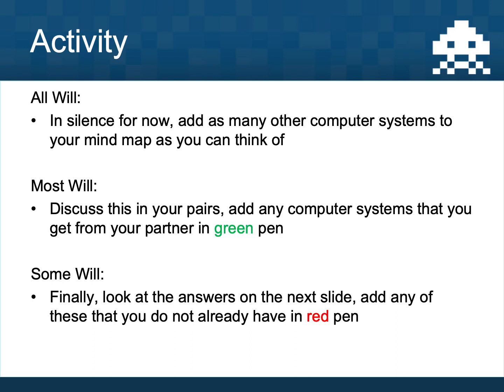Add as many different computer systems as you can to your mind map. If we were doing this in school you'd share your ideas and add those in green, and finally add my ideas in red. If you're doing this at home, put your own ideas in one colour, ideas from the internet in another colour, and then add my ideas in red on the next slide. Pause the video and draw a mind map of as many different types of computer system as you can — the answers are on the next slide.